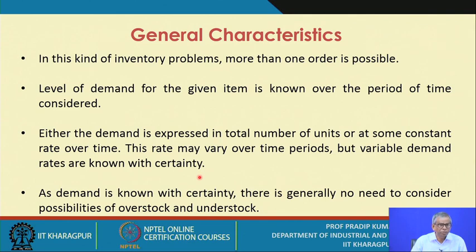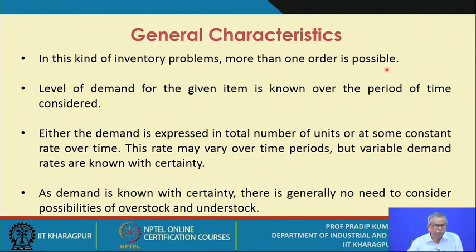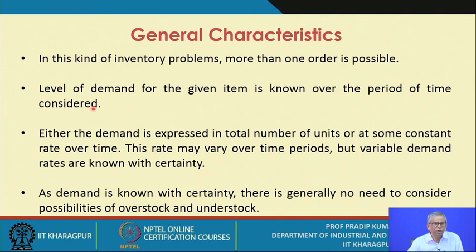Several points have been listed regarding general characteristics. In this kind of inventory problem, more than one order is possible — that is why it is referred to as a dynamic inventory problem. The level of demand for a given inventory item is known over the period of time considered. For example, the demand level for the next 12 months or one year is known with certainty — that is our assumption.